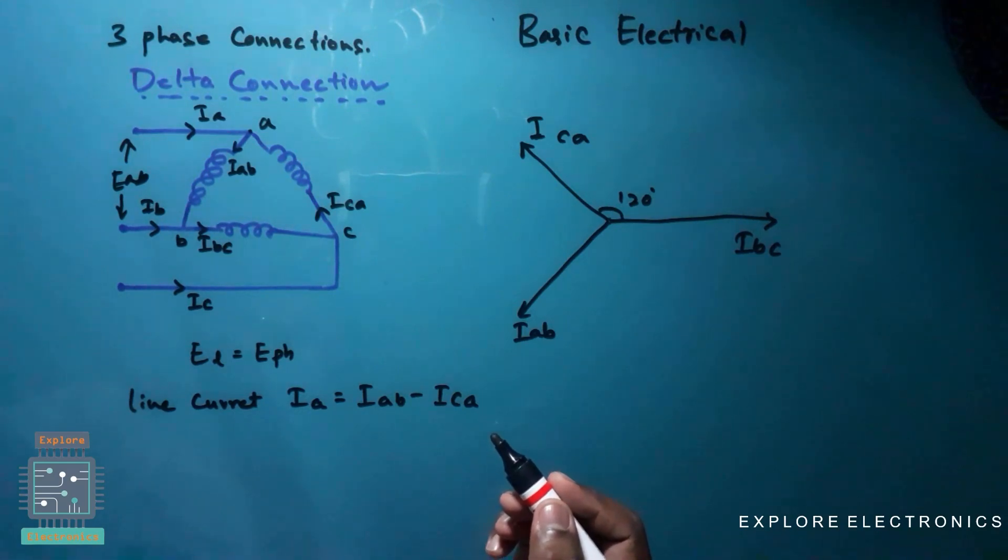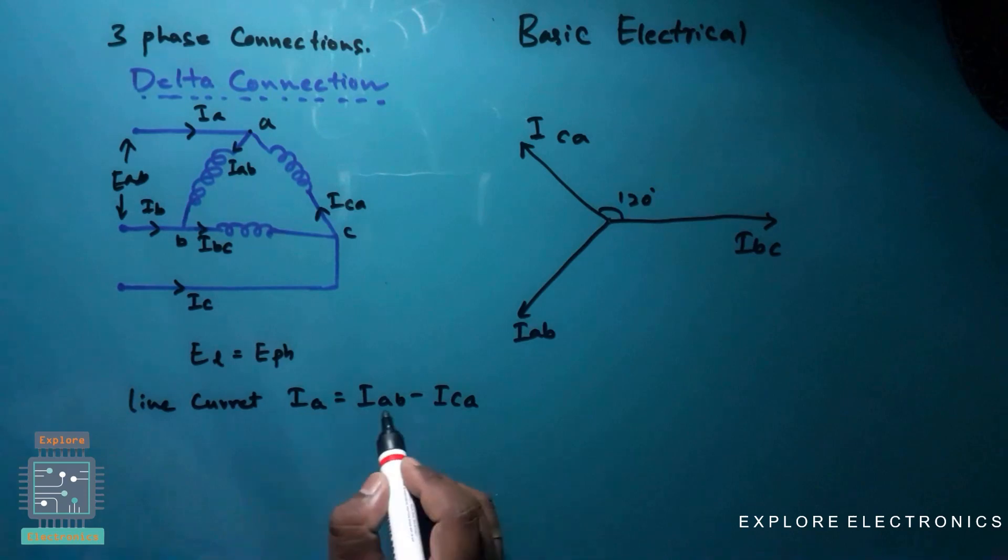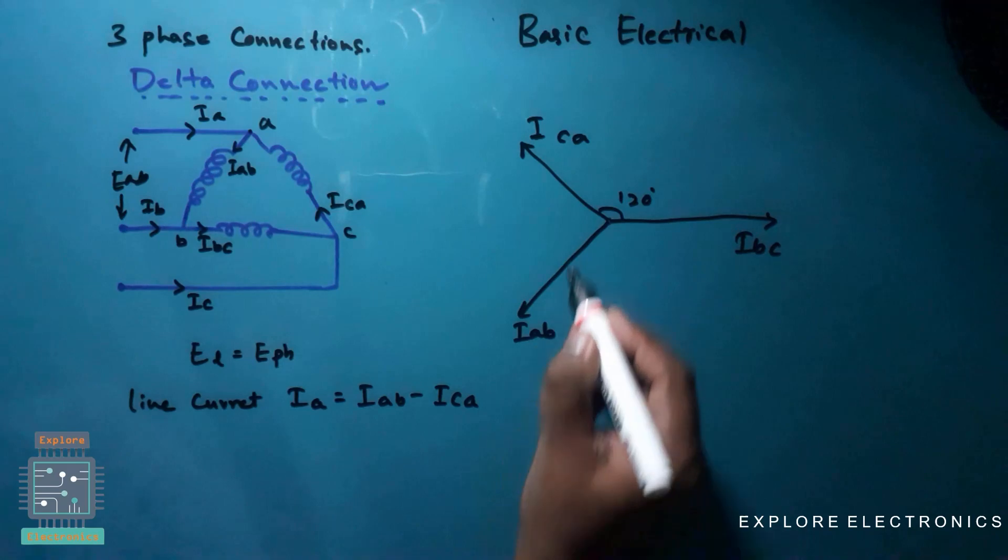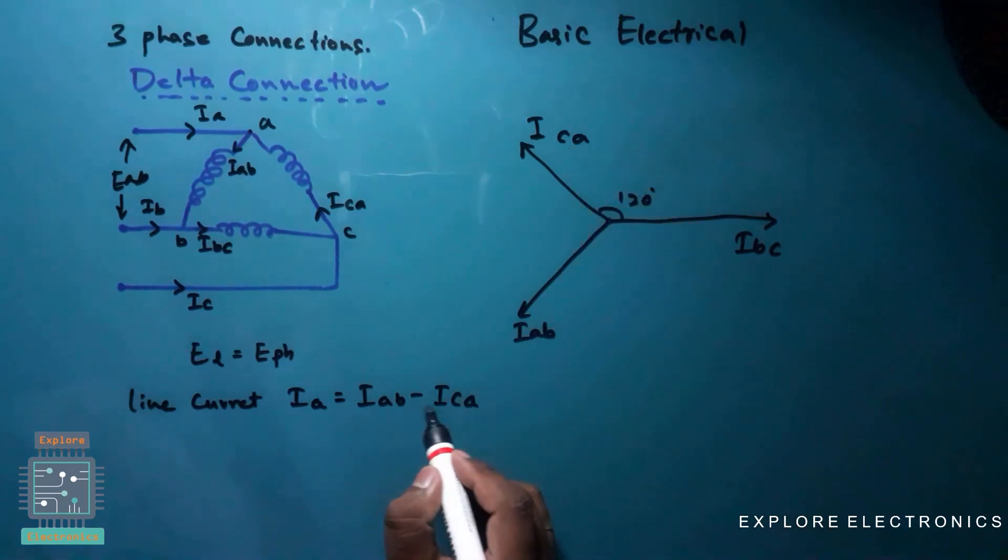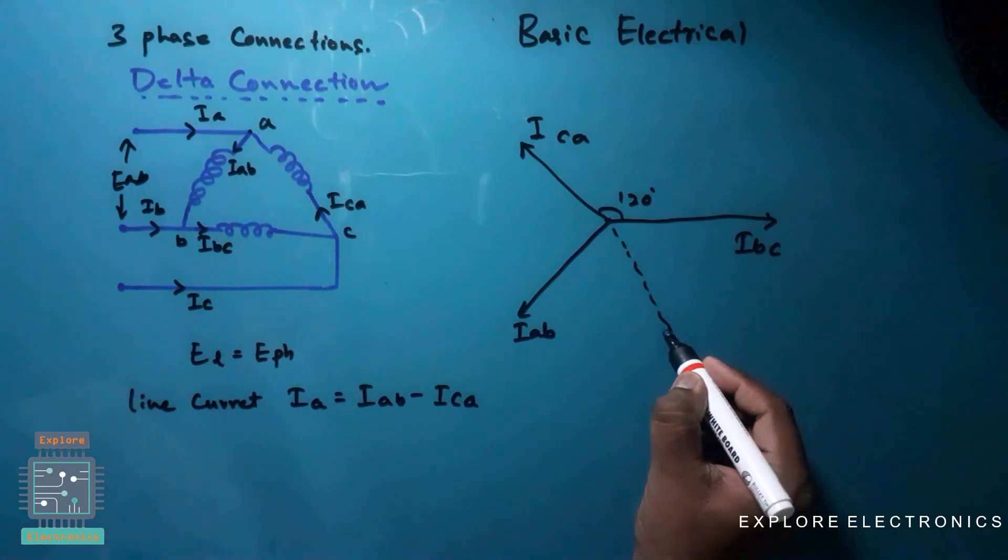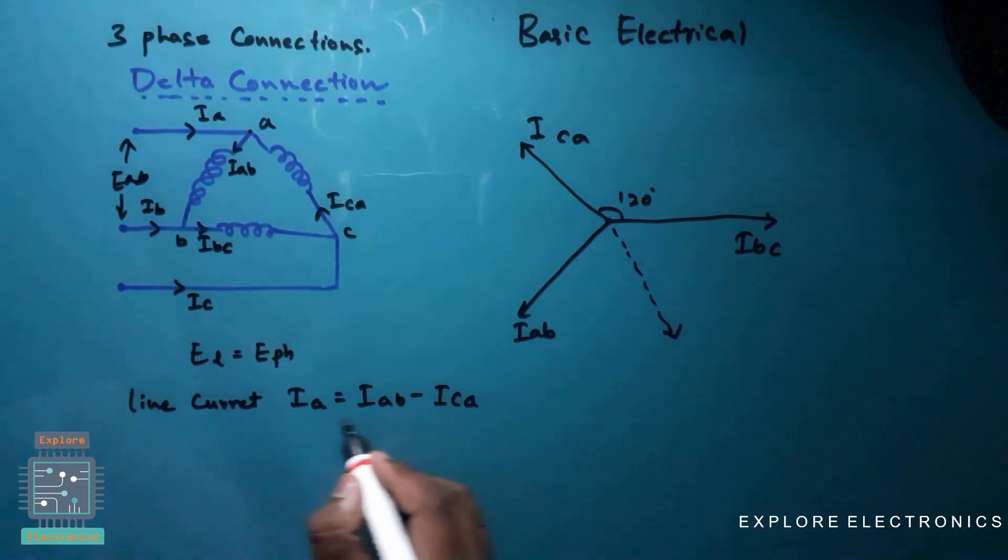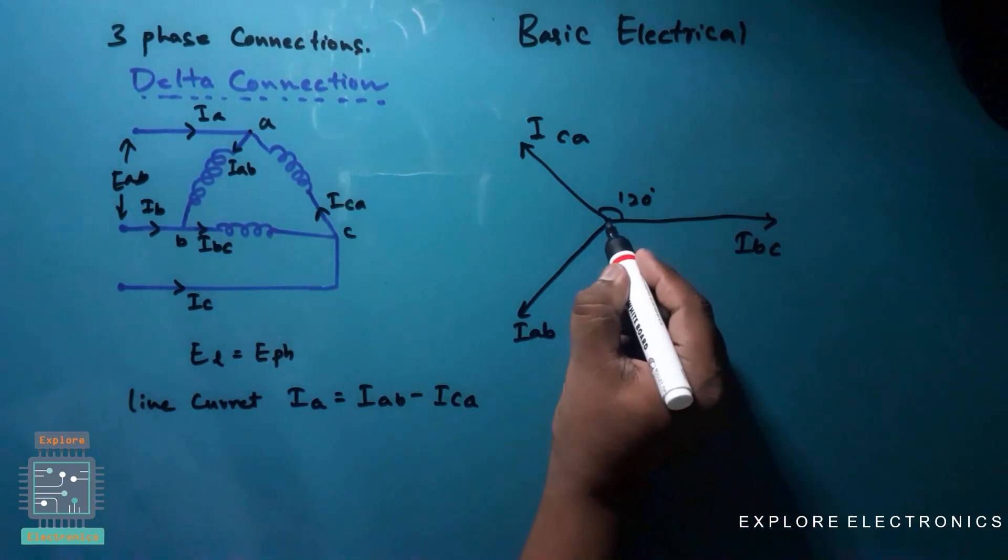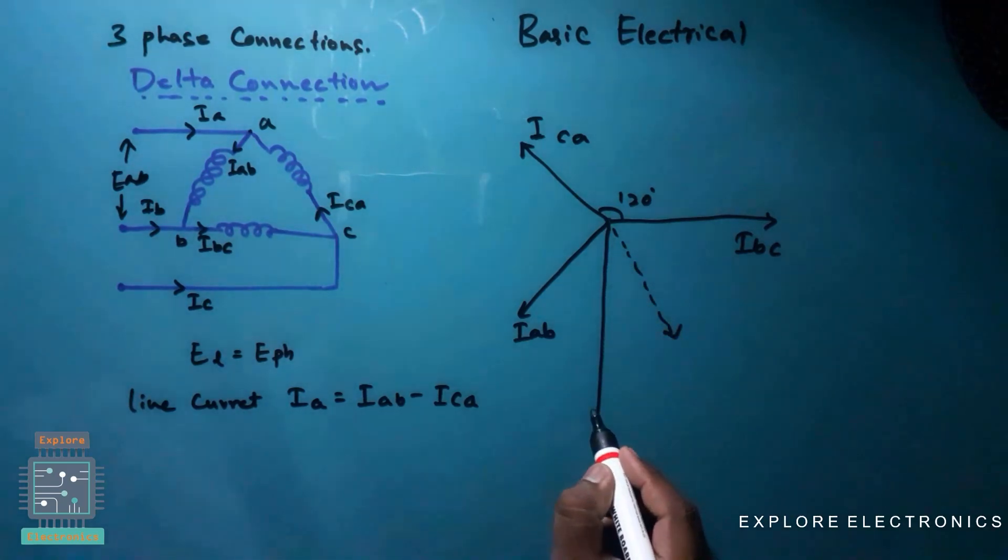So we need to calculate Ia. Ia is having Iab minus Ica, so this is Iab, this is Ica. Since I will be having minus, I need to project it back. So the addition of these two will be Ia, so I am going to get Ia here, the addition of these two.